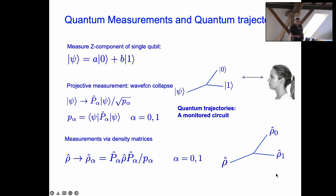You can also describe measurements via density matrices. If you start with a pure state density matrix, then after measuring the z-component and finding outcome alpha, you get a reduced density matrix conditioned on alpha. So you can think of density matrices as also undergoing quantum trajectories, splitting and forking when a measurement is made.